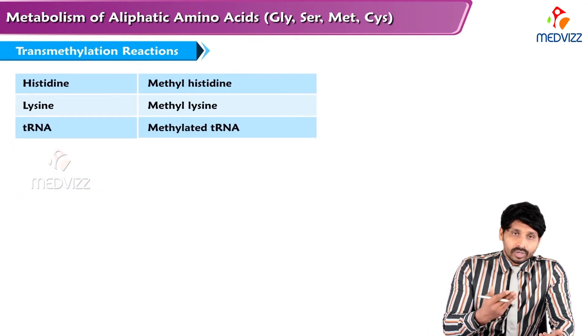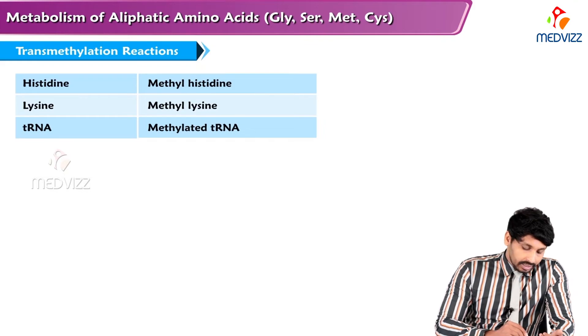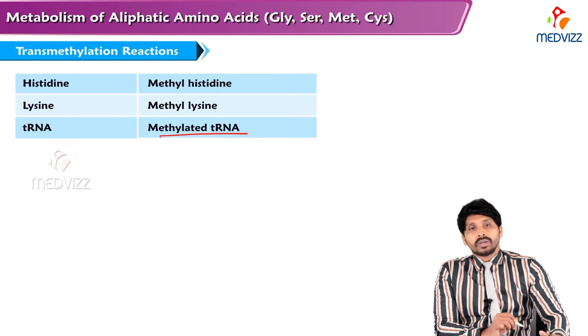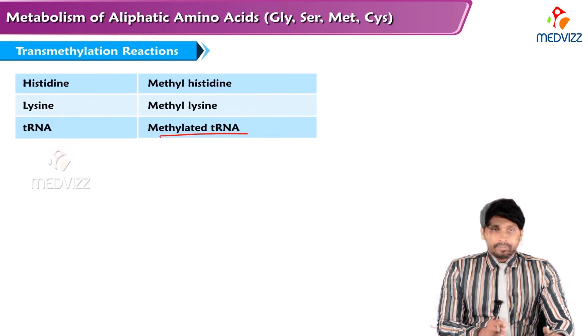Additional transmethylation reactions requiring SAM include: histidine to methyl histidine, lysine to methyl lysine, and tRNA to methylated tRNA.